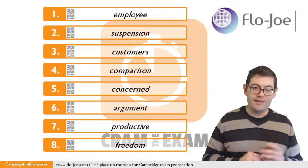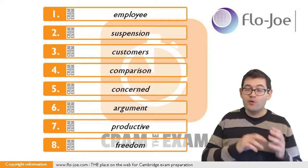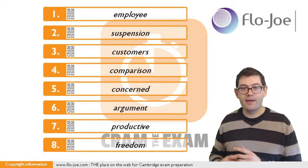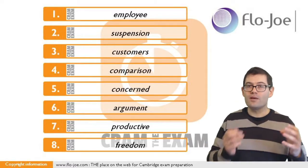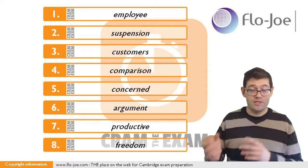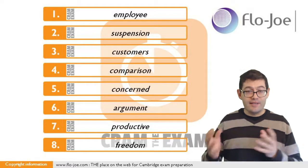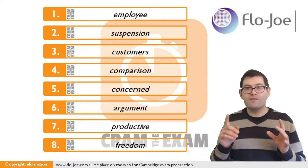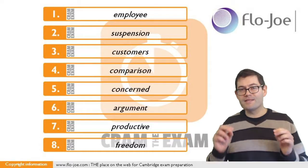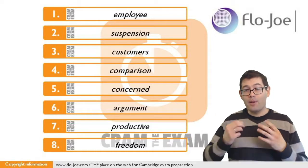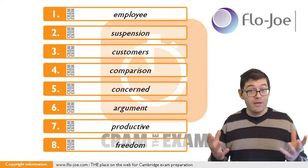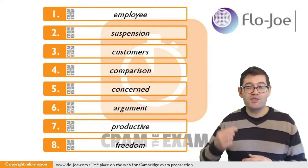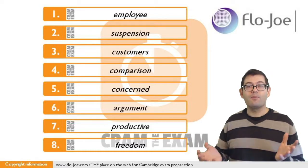Question number one is a nice easy way to start off this exercise. Before the gap we've got 'male', which is an adjective, but we don't have the noun that adjective is modifying, and before the adjective we've got an article with no noun to which it refers. So it's clear we need a noun of some kind. Paying attention to the context, we can see we need a personal noun — a person. Given the stem word, the answer is: employee.